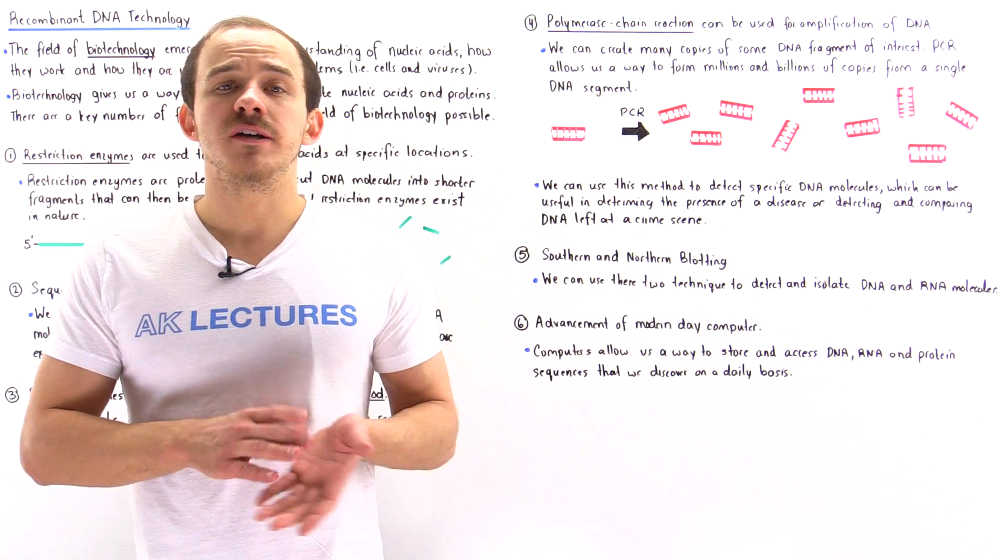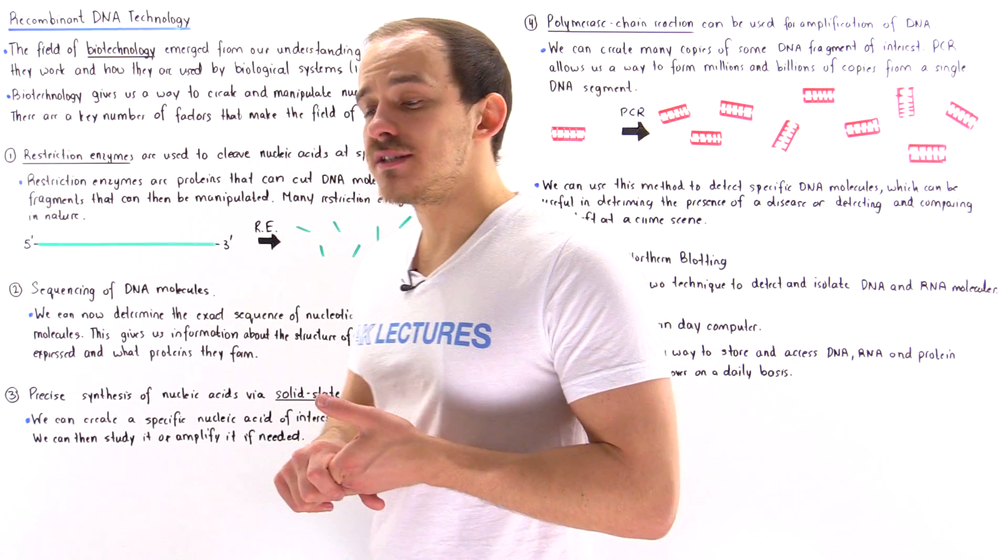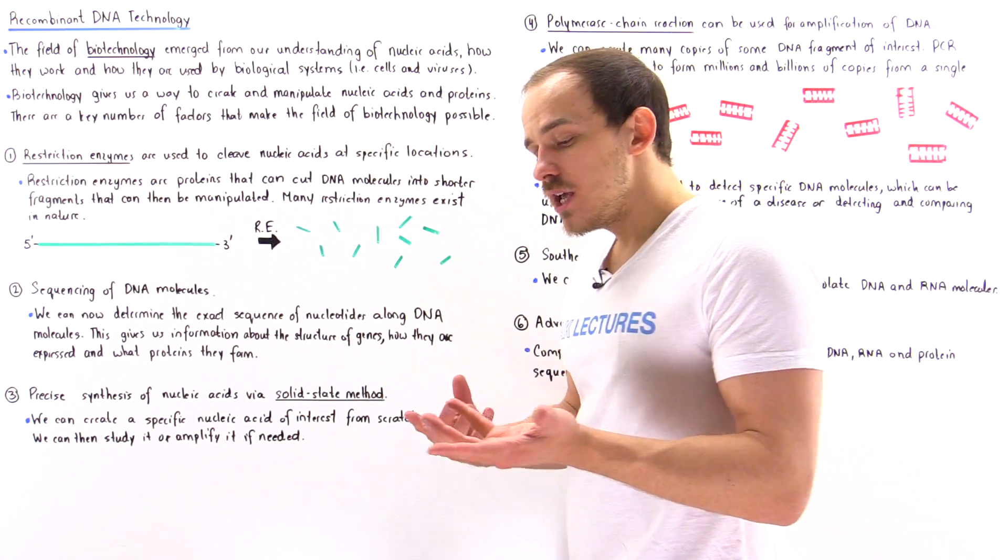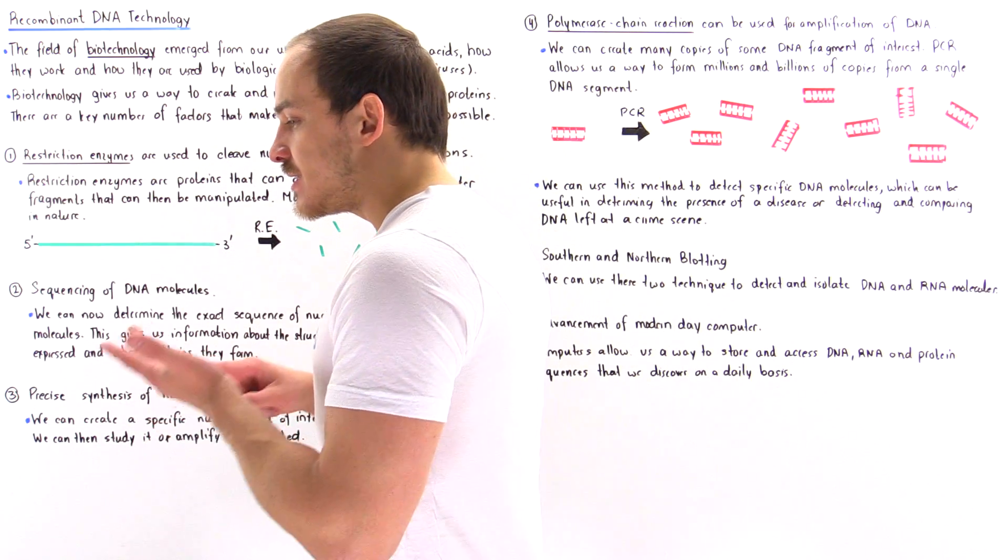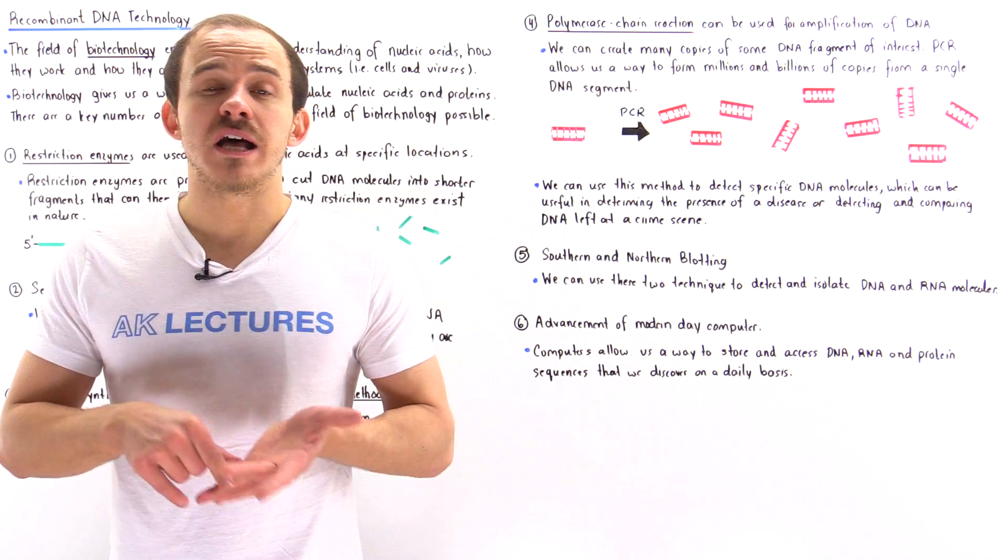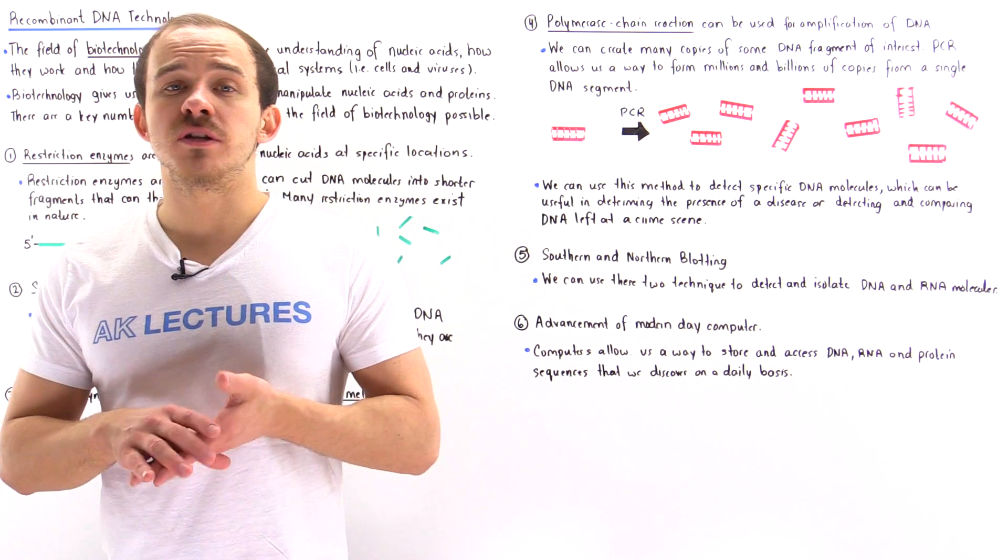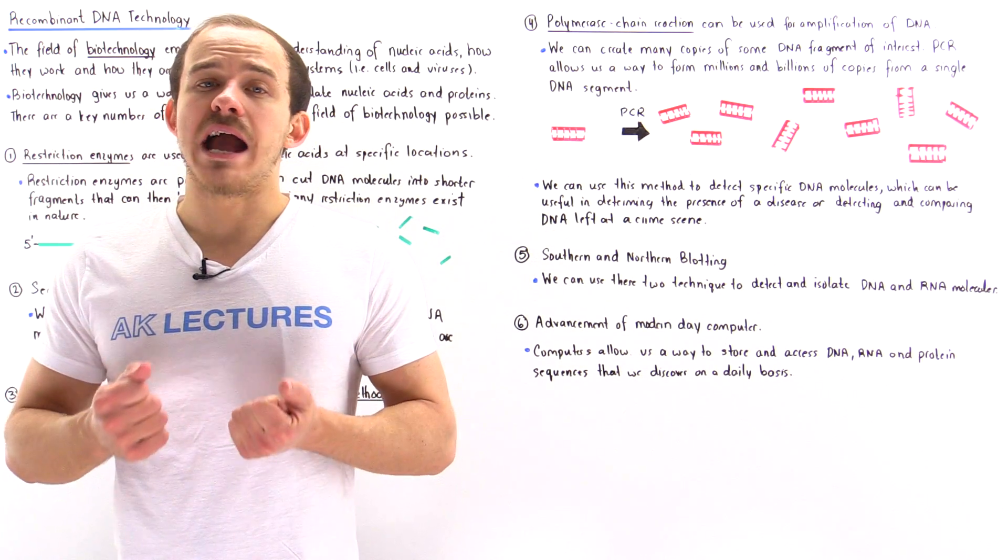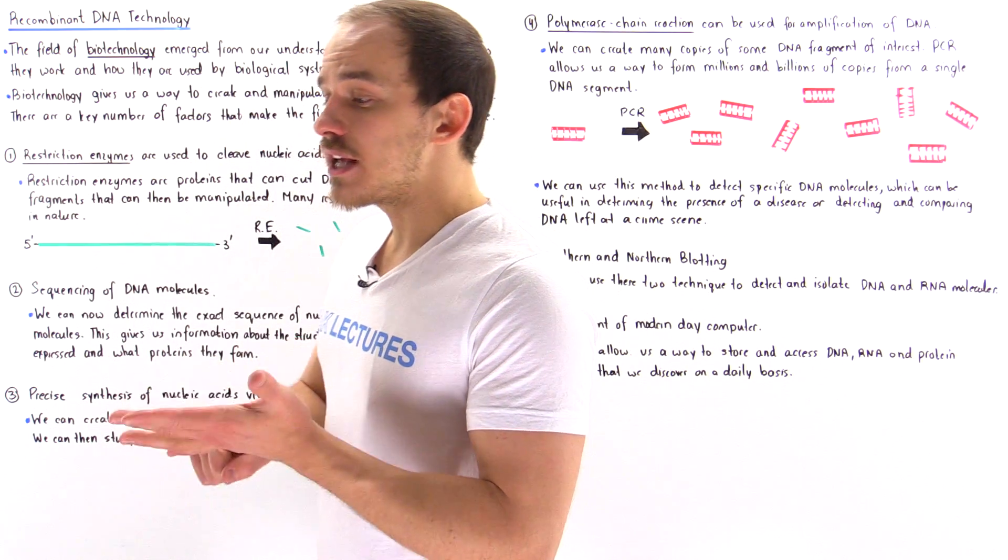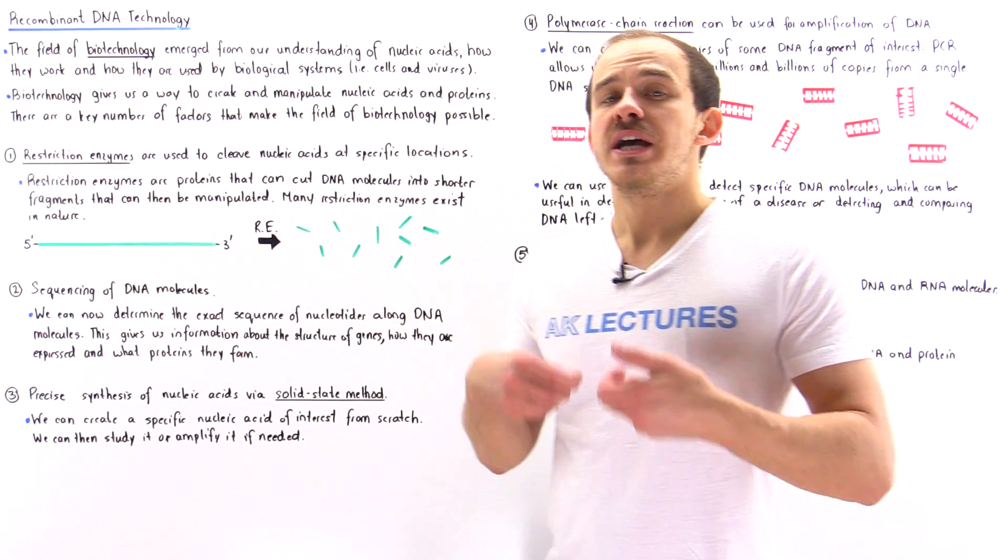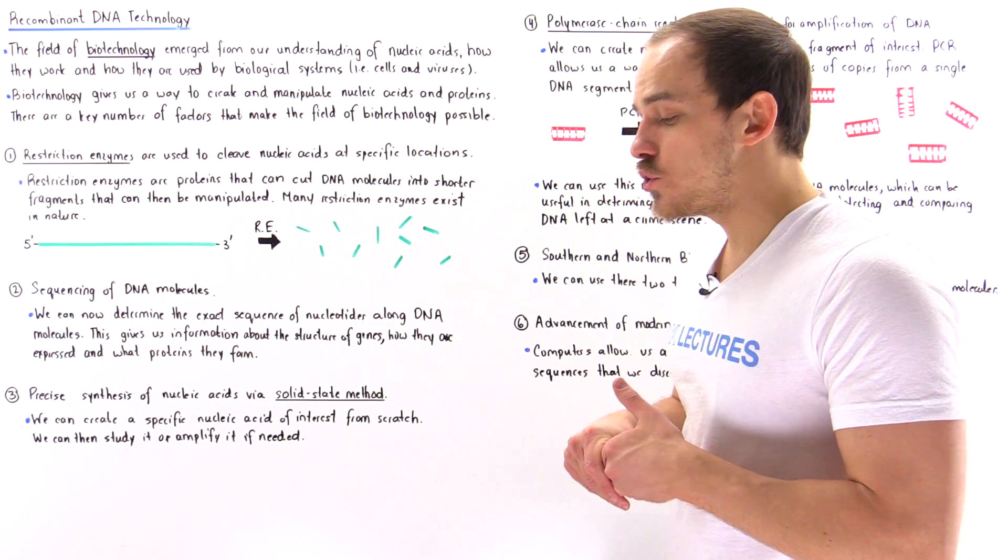For example, the field of medicine and the field of forensic science also use biotechnology. So in medicine, we can use biotechnology to synthesize a variety of different types of proteins and enzymes and hormones, these biological molecules that are used by our body. We can also detect the presence of different types of abnormalities and conditions that might be found in some specific individual.